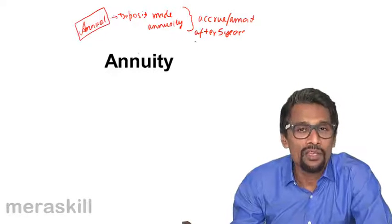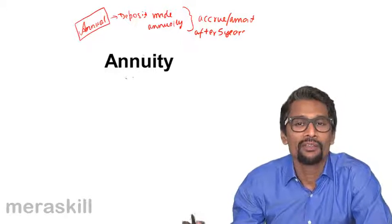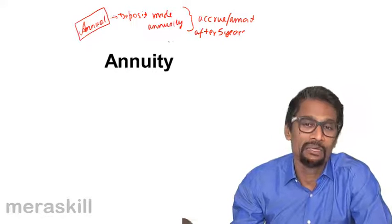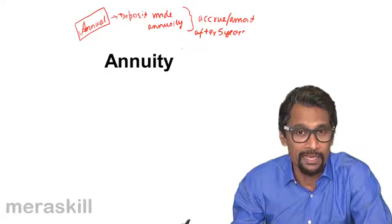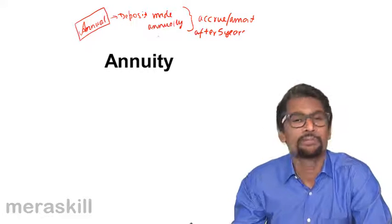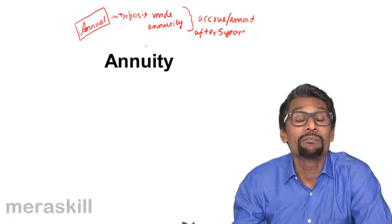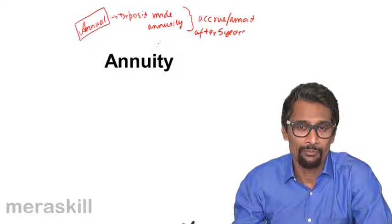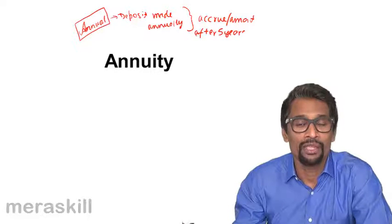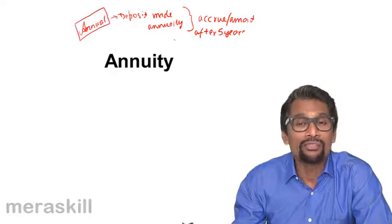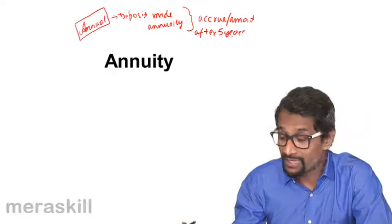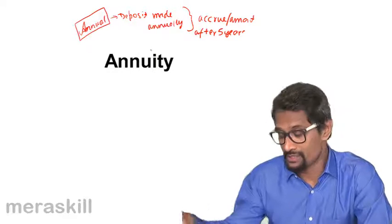Considering this process, what is your earning is going to be somebody else's expenditure. Much the same way, if you are going to spend something, it's going to be somebody else's earning. So the same principle can be applied even if you take a loan from someone and need to repay it at a certain rate. What will be the amount that you'll end up paying? That is also a part of annuity.